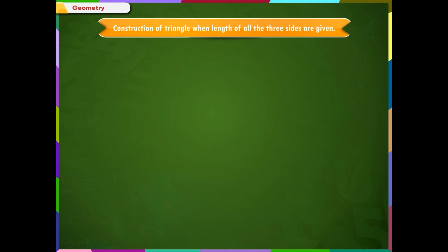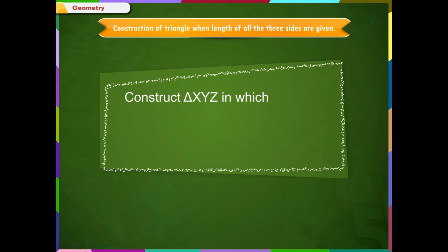Geometry: Construction of a triangle when the lengths of all three sides are given. Construct triangle XYZ in which XY is equal to 4.5 cm, YZ is equal to 5 cm, and ZX is equal to 6 cm.